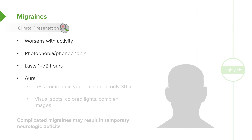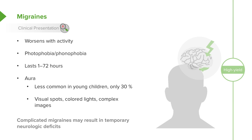Some patients with migraines will say that they sense an aura or see flashing lights or other things. This is less common in young children — only about a third do that. Generally, auras include visual spots, seeing colored lights, or even complex images. Occasionally, patients can have complicated migraines, and these can result in temporary neurologic deficits such as weakness or limpness. Those are rare but are definitely known to happen.